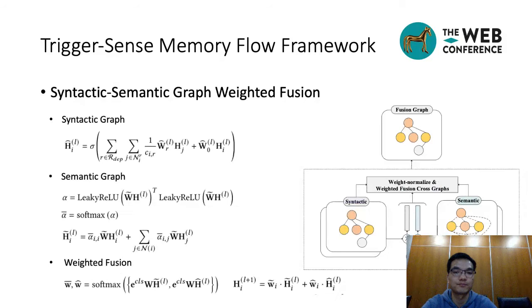We construct a directed syntactic graph from sentences based on dependency parsing, then use graph convolution to update node representations. For semantic graph, we compute the distance-adjacent matrix based on semantic similarity, then we compute a weighted average for aggregation of neighbor nodes, and update the node representations of semantic graph. Based on the two graphs, we design a graph weighted fusion module to dynamically fuse the two graphs according to the relative semantic and syntactic importance of words.